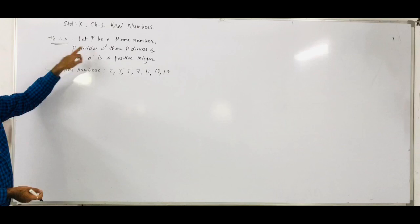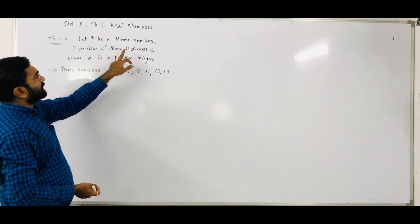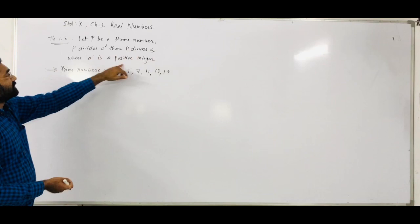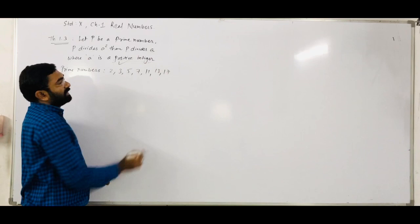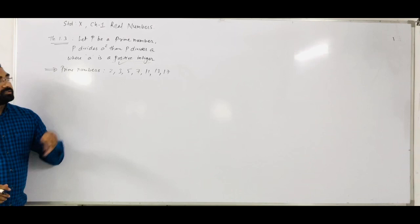That prime number divides A squared, then you can also say that prime number divides A, where A is a positive integer. Positive integers are 1, 2, 3, 4, 5, 6 and so on. So we take a positive integer as A.